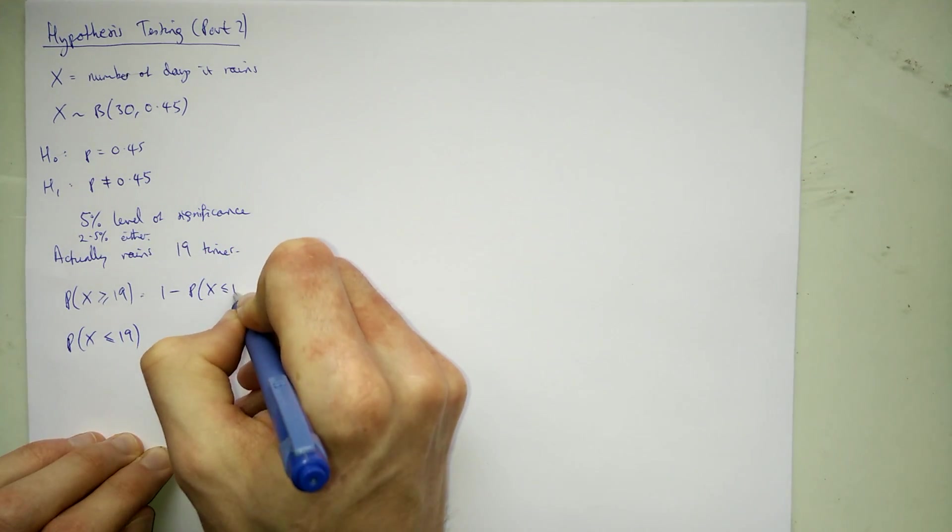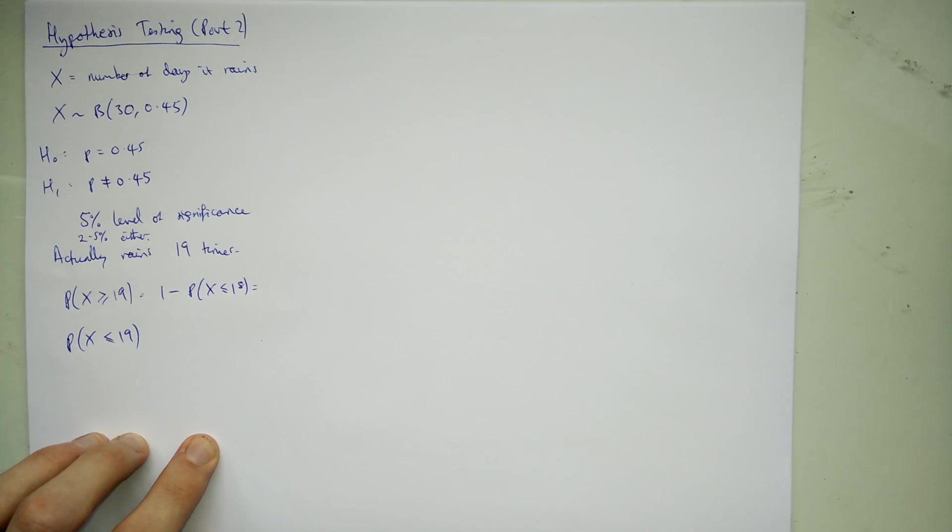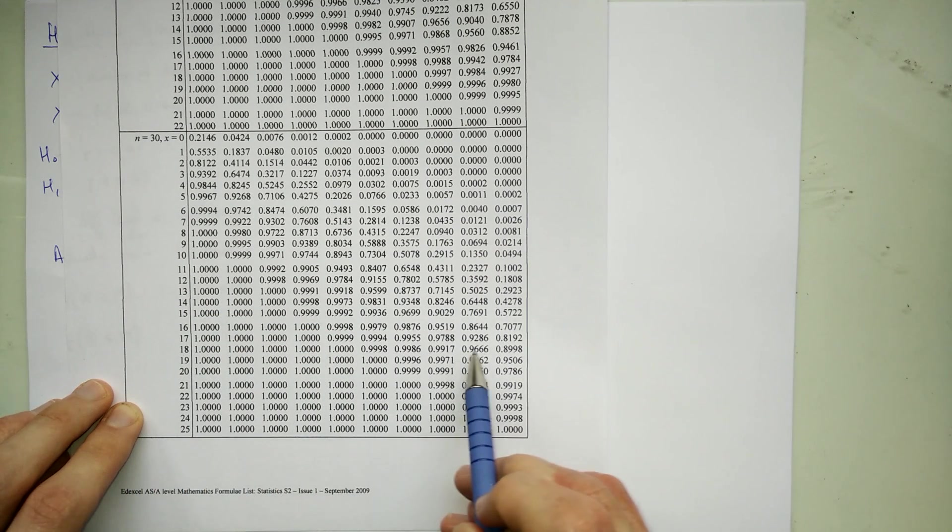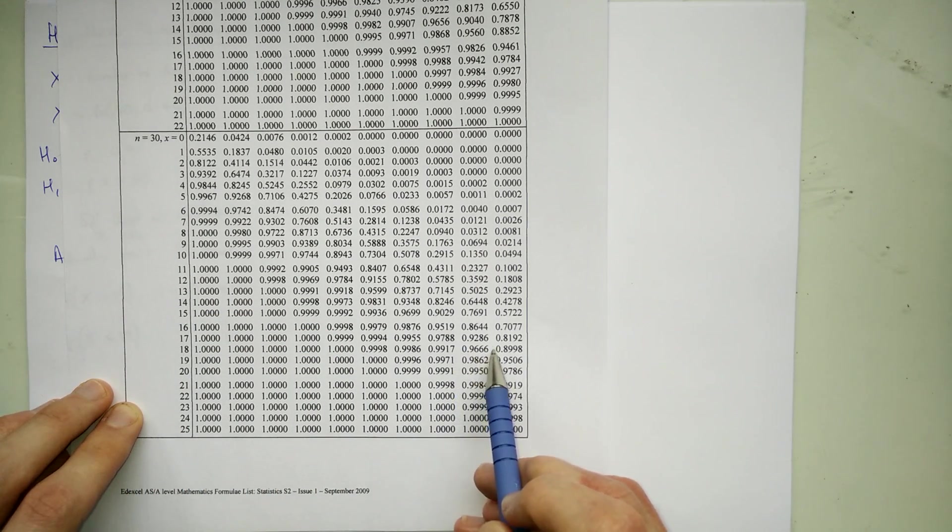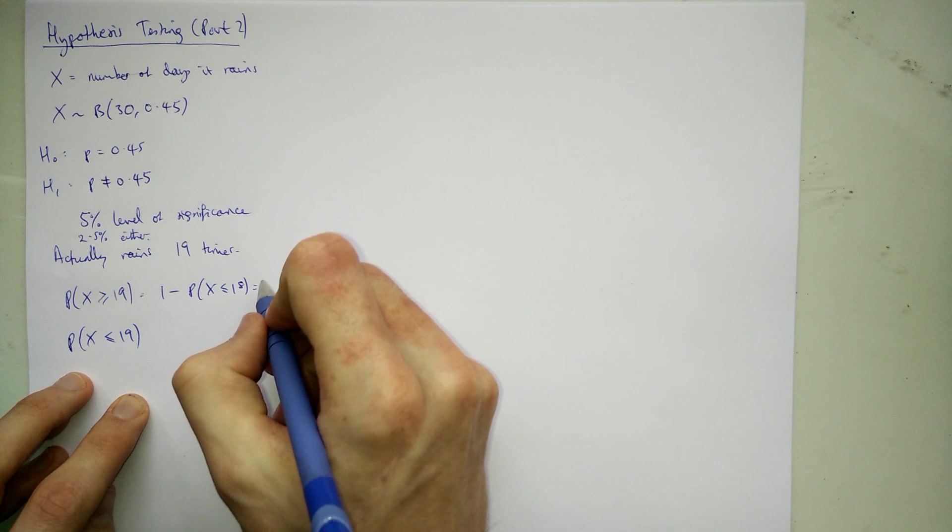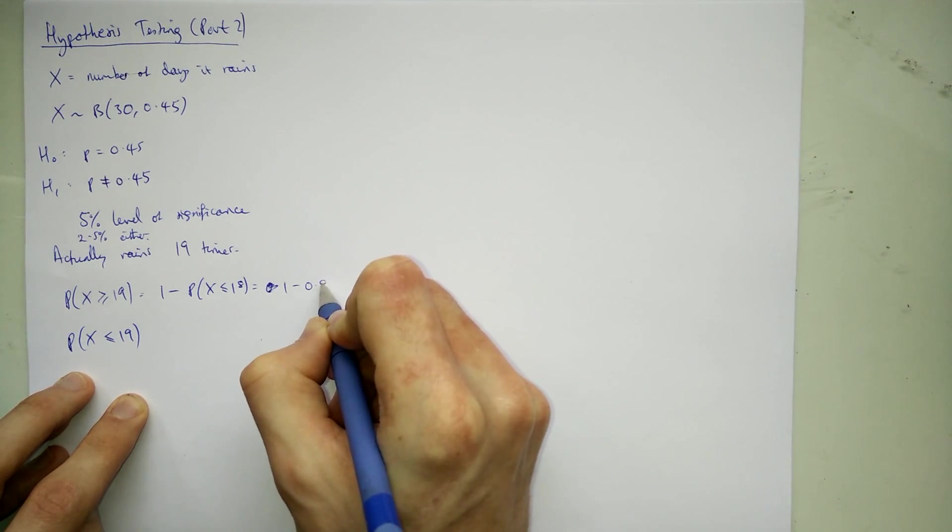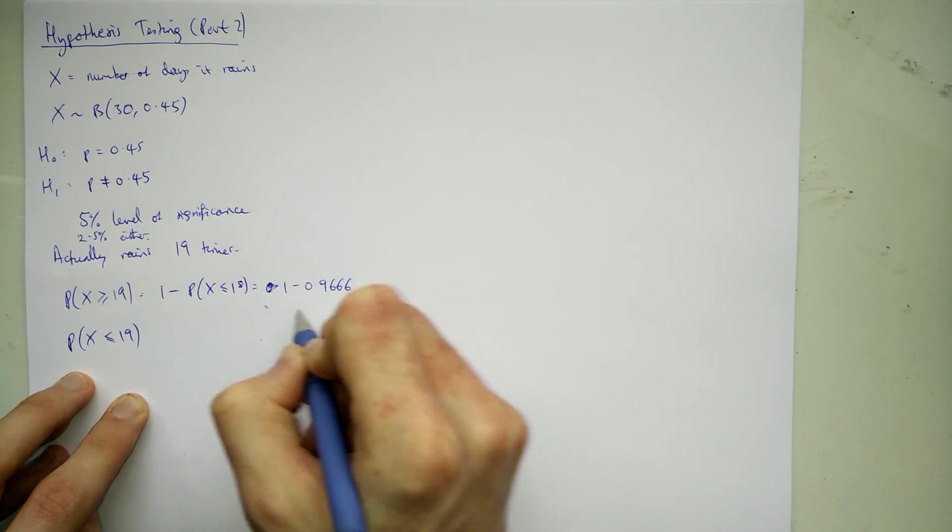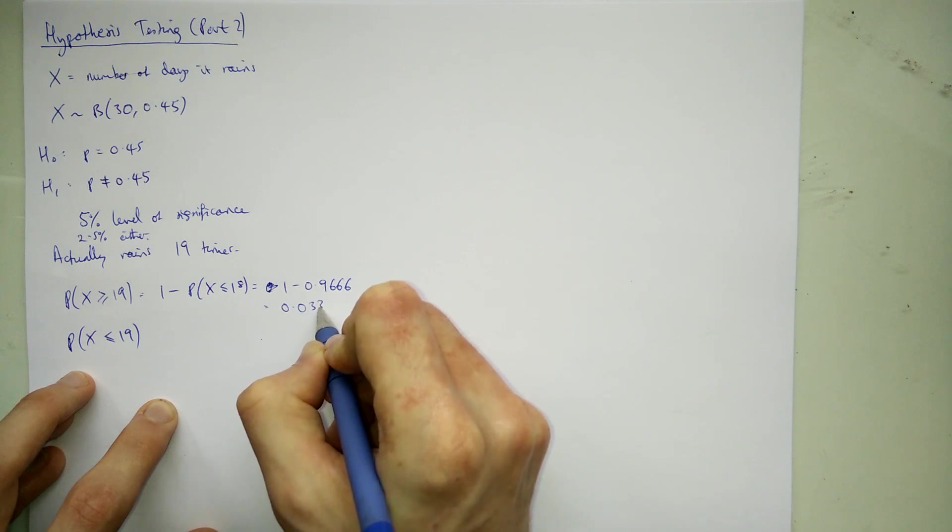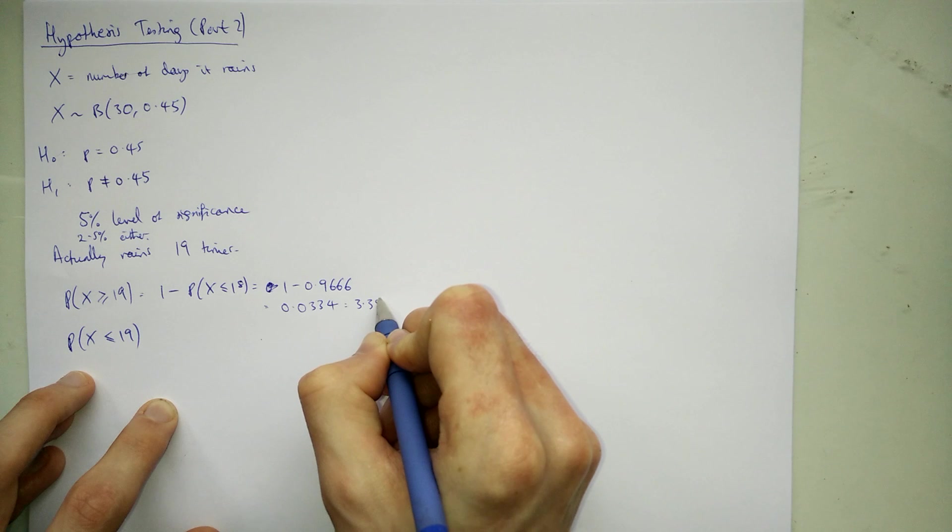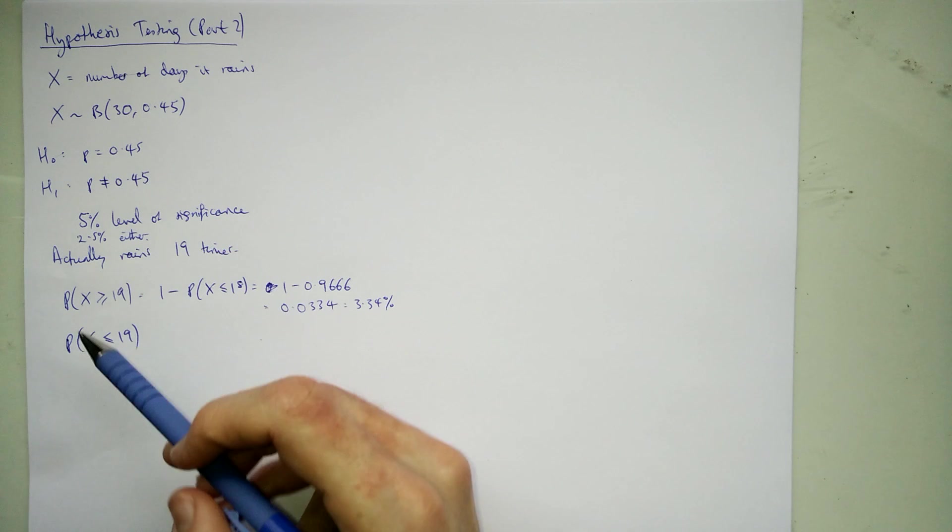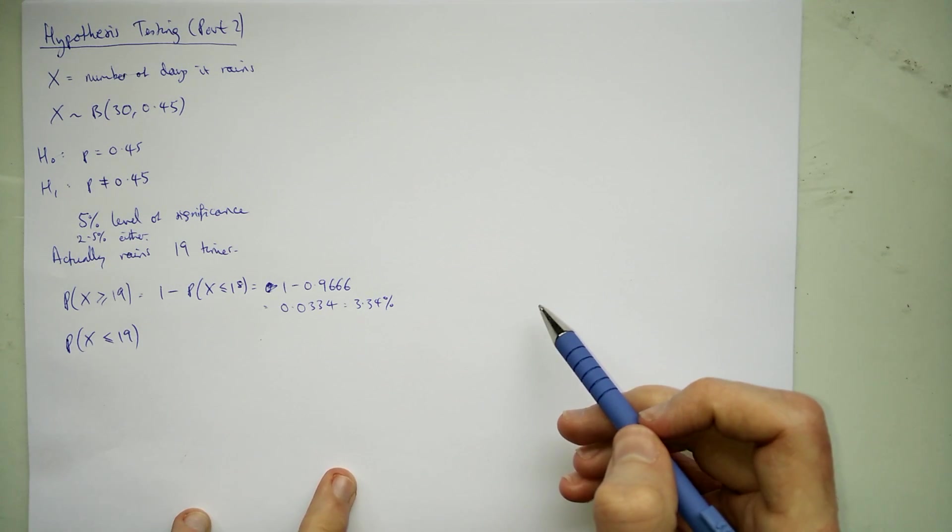Let's work out these ones there. So this is the probability of X being less than 18. So it's just like a normal binomial question. Go back to my table where n is equal to 30. There it is. We're looking at X being equal to 18. Go across to the 0.45 column which is just there. That's 0.9666. What a lovely number. It's like 1 minus 0.9666 which is the same thing of course as 0.0334 or 3.34%. So quite unlikely that the probability is 0.45 and it rains 19 times, only 3% chance that could have happened.